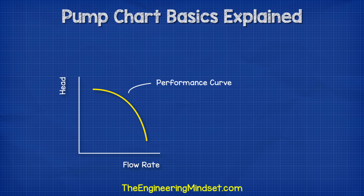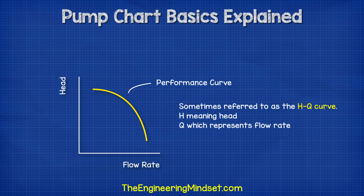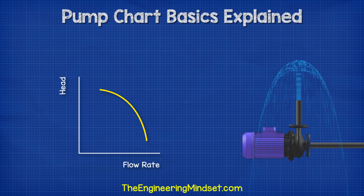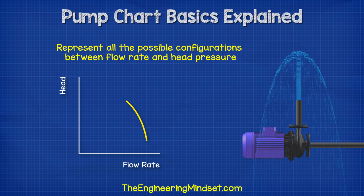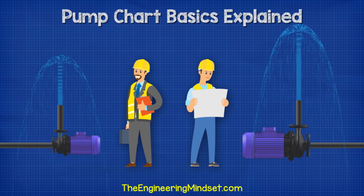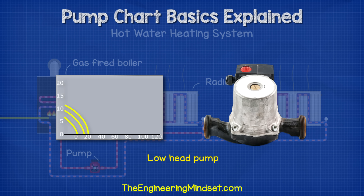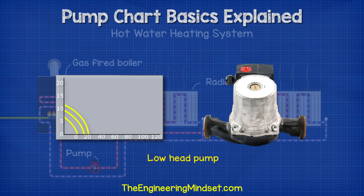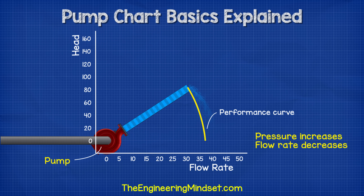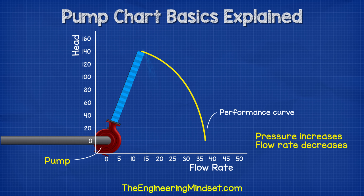Performance curve. This is sometimes referred to as the HQ curve — H meaning head and Q which represents flow rate. The manufacturer will test each pump to obtain the performance data and then plot this on the graph. This will represent all the possible configurations between flow rate and head pressure and we use this to check whether a pump will suit our requirements. The performance curve will be different for each pump and some will suit our system needs better than others. You will usually see that as the pump flow rate increases, the head pressure decreases.